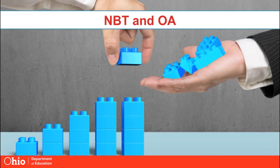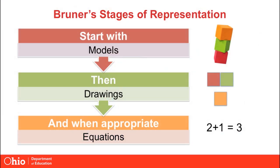In the domains of number and operations in base 10 and operations in algebraic thinking, few clarifications were made. Wording was clarified in various standards to ensure that kindergarteners were not required to write equations. Teachers should follow Bruner's stages of representation: concrete, pictorial, and abstract. Students should start with models, then move to drawings, and although students should be exposed to equations, they should only use them if they are ready.